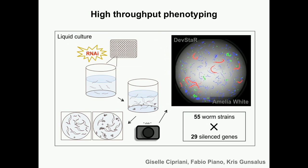One thing I'll mention is that it was very important that we do this at very high throughput in order to have the statistical power to look for these effects. We conducted all of this in liquid culture in 96-well plates. The phenotype I'm describing is really just embryonic lethality — the proportion of offspring that died. We estimated embryonic lethality using a computer algorithm developed by Amelia White, a graduate student at NYU, that essentially classified objects within our 96 wells as embryos, larvae, or adults. I'm going to tell you results here that have to do with 29 embryonic genes that we targeted, and we looked across a total of 55 wild-type worm strains.